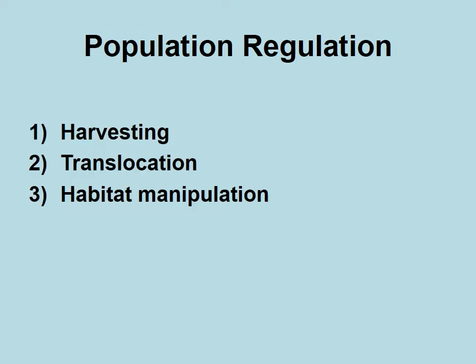When we're talking about population regulation, we're really talking about three things: harvesting animals, translocating animals, and manipulating the habitat to move animals around. Harvesting is the physical removal of animals, usually through hunting. Translocation is also the physical removal of animals, but involves moving live animals so they are not killed. Habitat manipulation is about pushing animals around on your game farm or game reserve without actually removing any animals or decreasing the population.